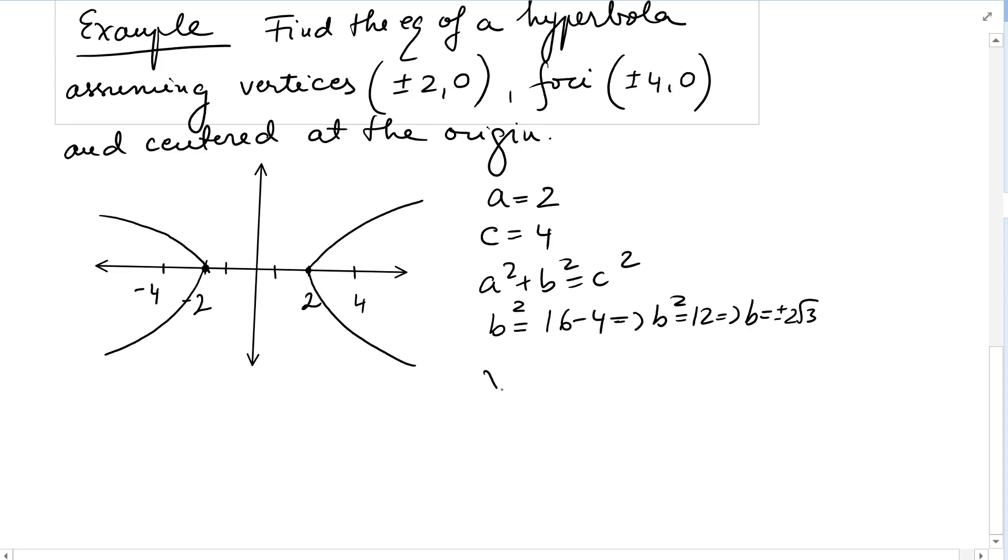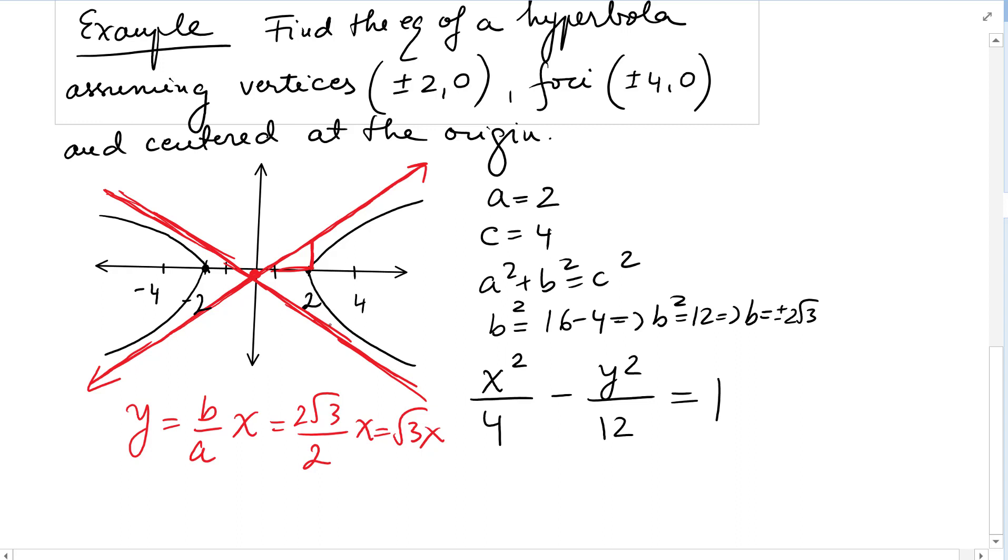So the equation would be x²/4 - y²/12 = 1. The asymptotes, which pass through the origin, would be y = ±(b/a)x. So one of the equations is (b/a)x, which is 2√3/2 times x, which is √3·x, while the other would be -√3·x.